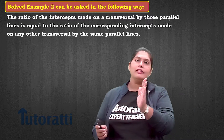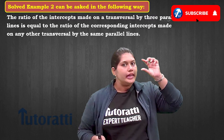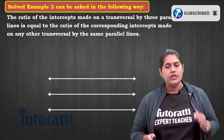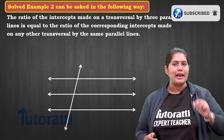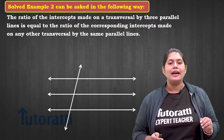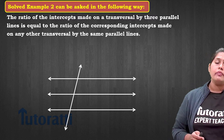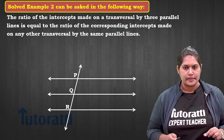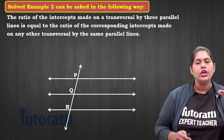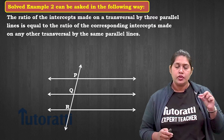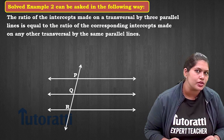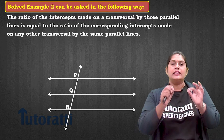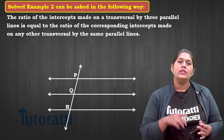We are going to apply the concept of intercept — that is, the part of a transversal — on parallel lines. So let's say I have three parallel lines and a transversal. This transversal has two intercepts. Let's name the points P, Q, and R respectively. The two intercepts are PQ and QR.